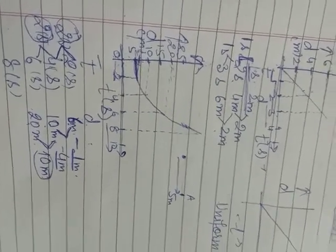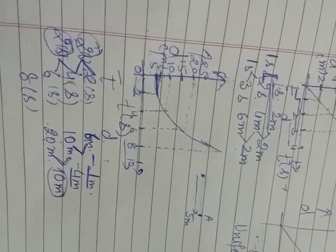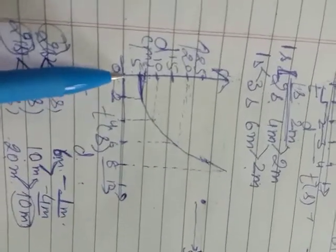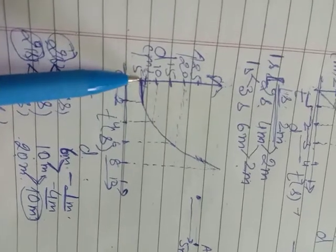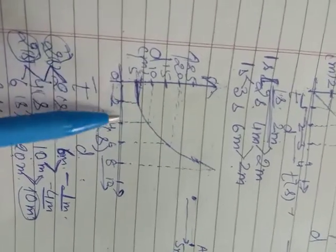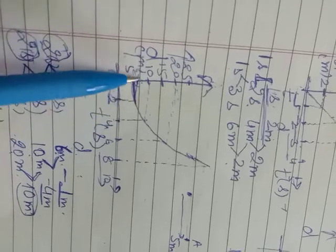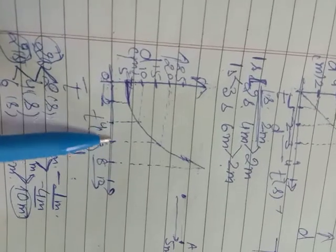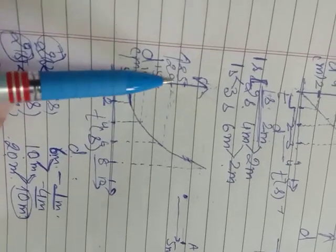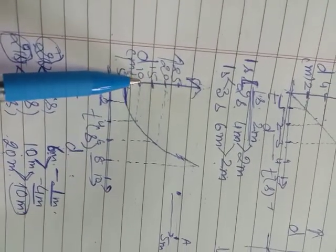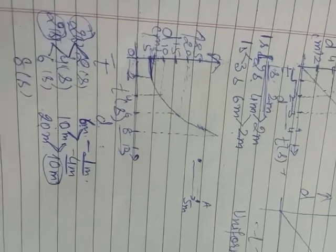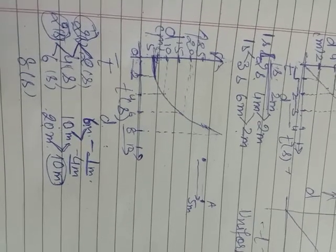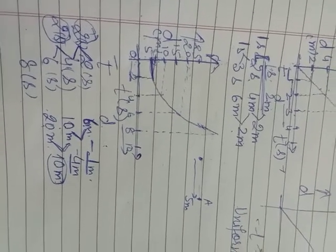The object is not covering equal distances in equal intervals of time, so we say the motion here is non-uniform. Why is the motion non-uniform? Just see from the graph once again — in the first two seconds it covers 1 meter, in the next two seconds it covers 4 meters, and in the following two seconds it covers 10 meters. Every time, in equal intervals of time, the distance covered is not equal.